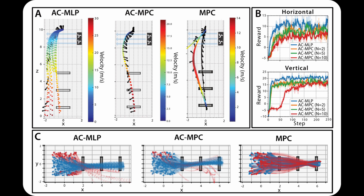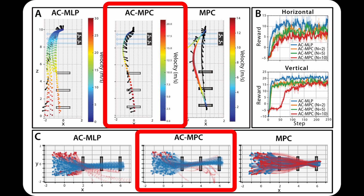We conduct a series of experiments that compare model-free RL, actor-critic MPC, and standard MPC. The experiments show that actor-critic MPC is more robust to situations that drive the system to unseen or out-of-distribution scenarios.